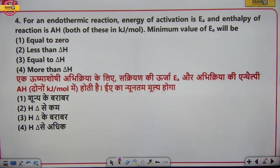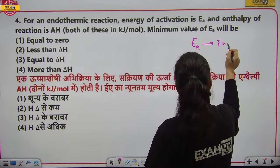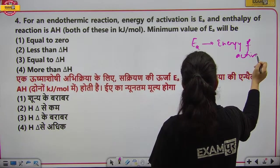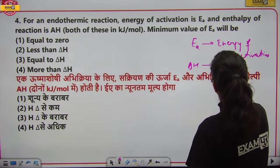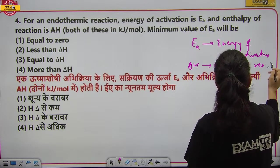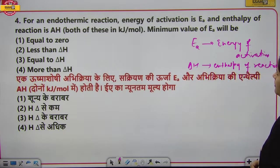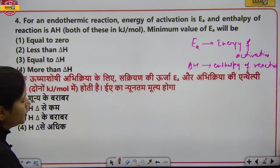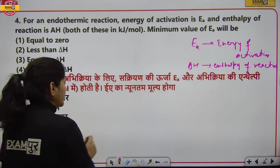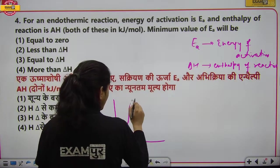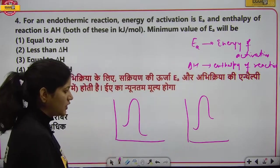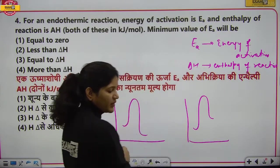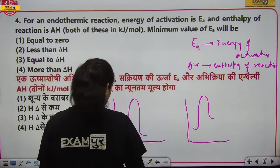अगला सवाल: एक endothermic reaction है, activation energy और enthalpy of reaction दी है दोनों kilojoule per mol में। Endothermic reaction का graph देखो — product की energy reactant से ज्यादा होती है, उसमें energy absorption होती है। Graph में reactant यहाँ है, product यहाँ है।